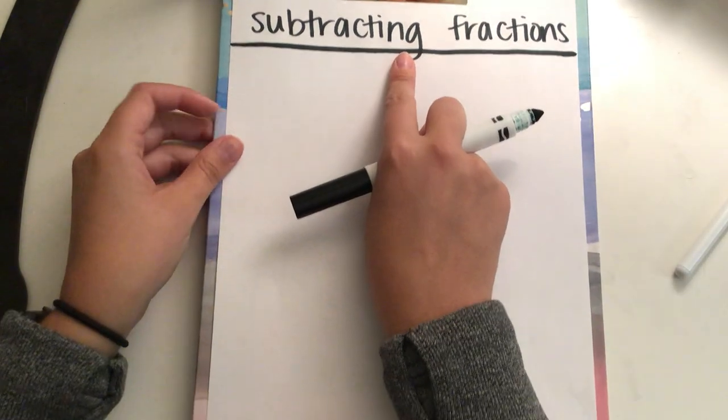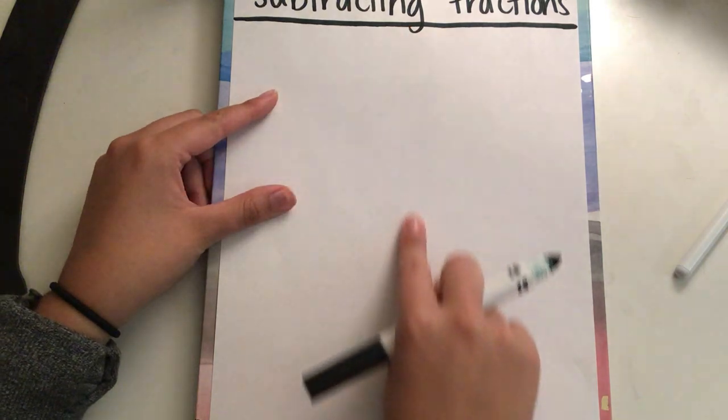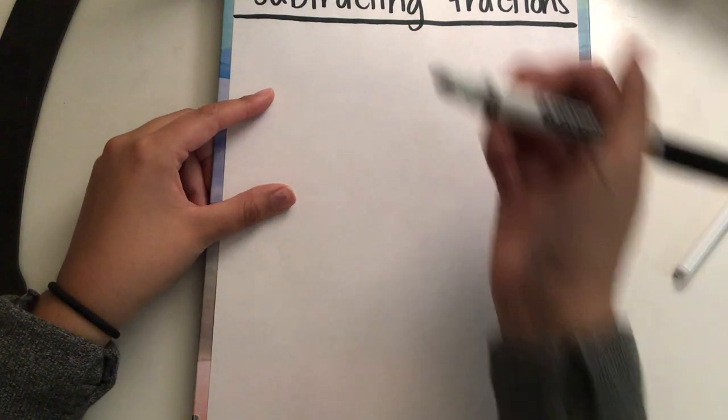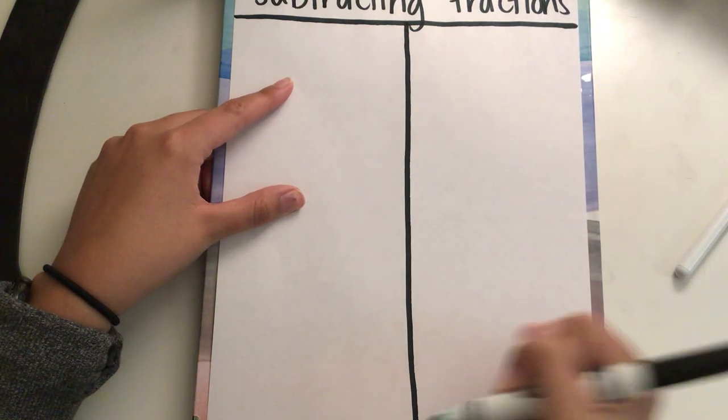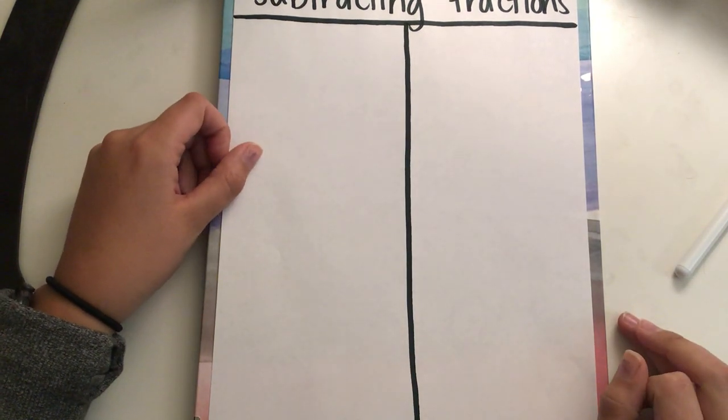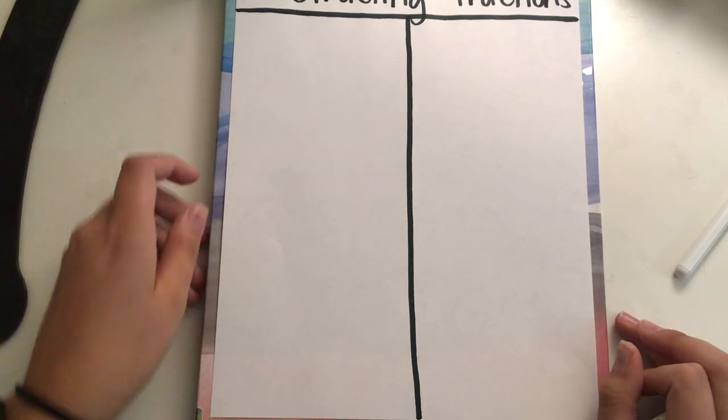And then we're going to go about the middle here. We're going to make a line that goes all the way down, just like this. If you have a ruler and you think that's really helpful to use, go for it.